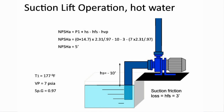Now, if the same pit, same situation occurs, but the water temperature goes up to 177 degrees Fahrenheit, this has a vapor pressure of 7 PSIA, and the NPSH available drops to 5 feet.